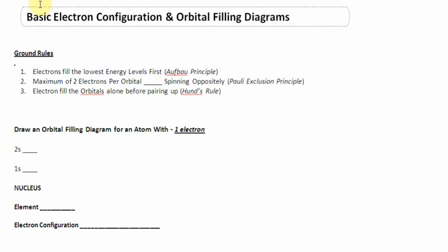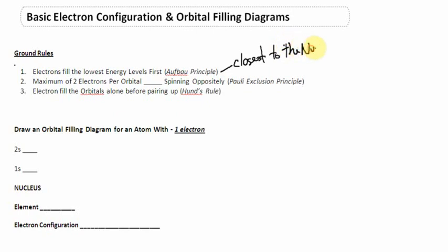The ground rules for today are: number one, electrons will fill the lowest energy level first. That means closest to the nucleus. We're going to fill up areas closest to the nucleus first, and the real reason is simply because protons and electrons are attracted to each other and they want to be as close together as possible.